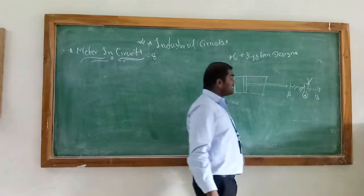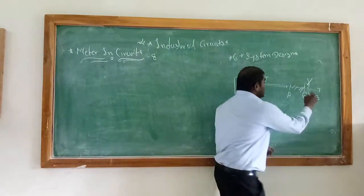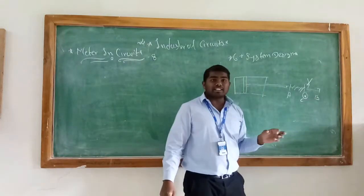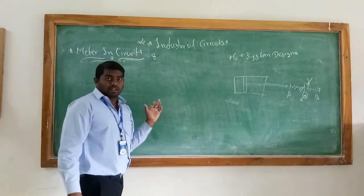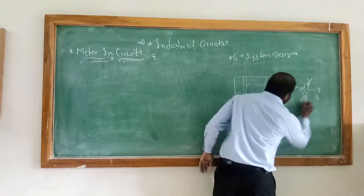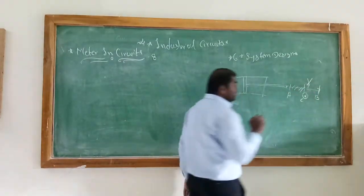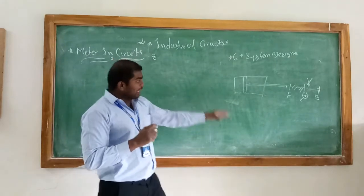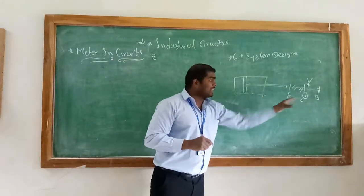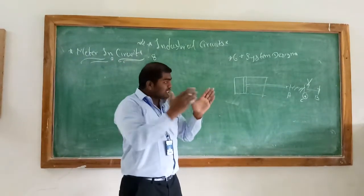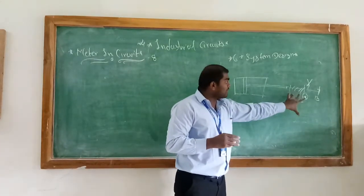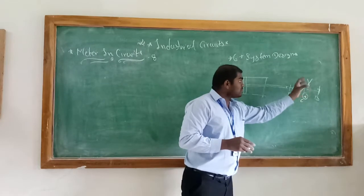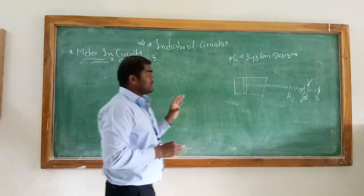It will be control in meter-in circuits, because you are controlling the flow inside the cylinder. After that, performing this function, you want to go fast. So your speed is increased here. From position C to B, your speed is increased. So that time you are using another circuit. Just consider that it is a traverse speed circuit.